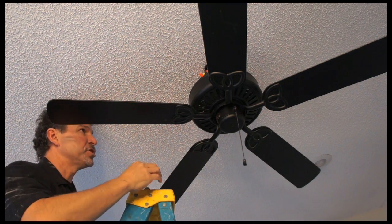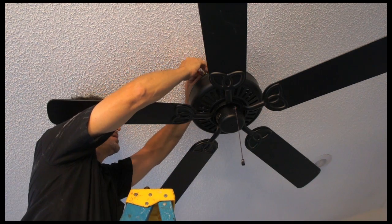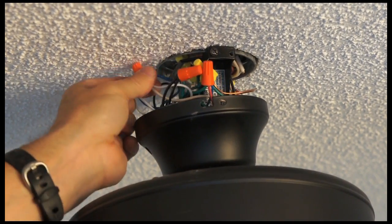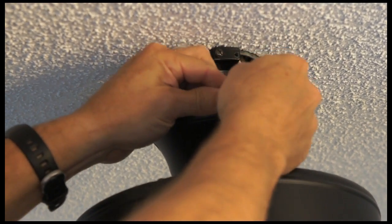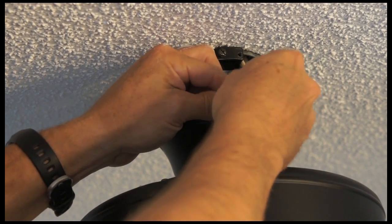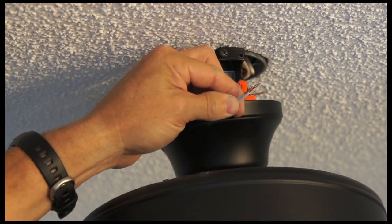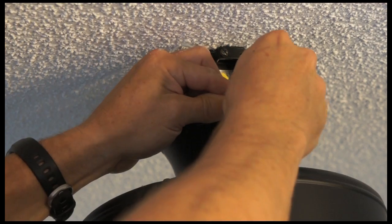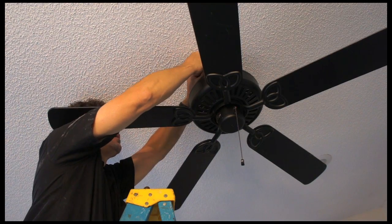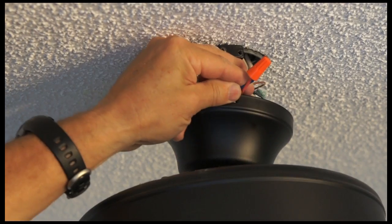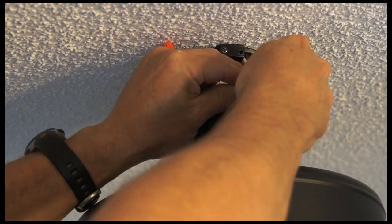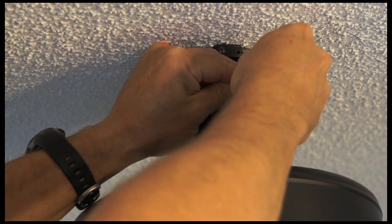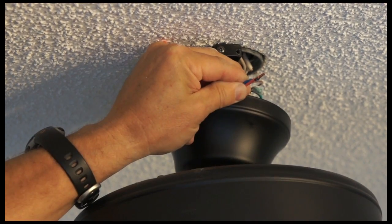So now I'm going to check each connection, white to white. I'm going to remove the wire nuts to make sure the wire hasn't broken off inside. And I'm going to remove my blue to red, which is the controller. And that seems to be good.